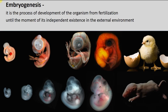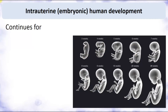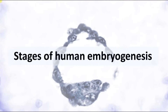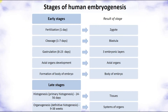Embryogenesis spans from fertilization until the moment of the organism's independent existence in the external environment. Intrauterine embryonic human development continues for 280 days, 40 weeks, 9 calendar months, or 10 lunar months.